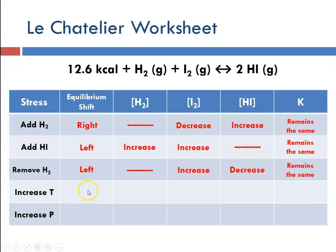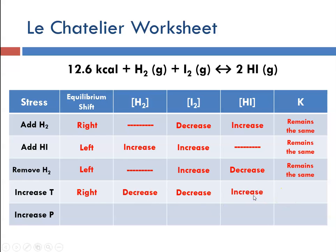If we increase the temperature here, this is an endothermic reaction, so it's going to shift to the right to reduce that stress. That means hydrogen and iodine reactant concentrations will decrease, and product concentration will increase. If the product concentration increases, the value of the equilibrium constant increases because that is an increase in the numerator.